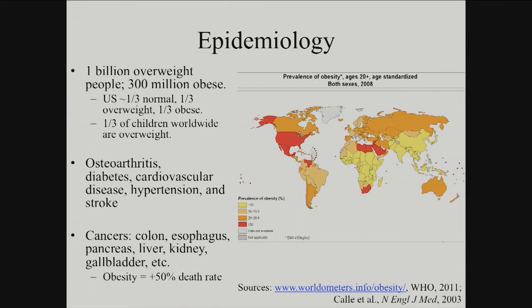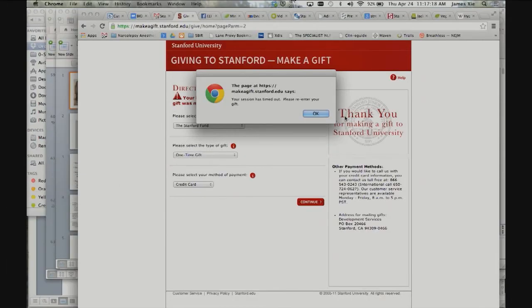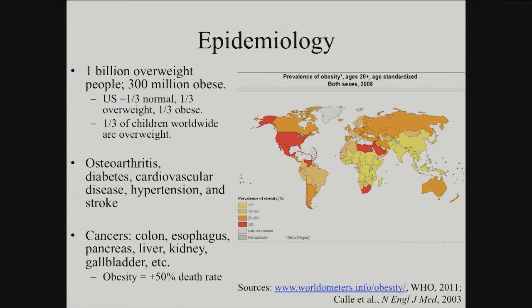Obesity itself is a problem because it is basically the root cause for a lot of other things — arthritis, diabetes, cardiovascular disease, strokes, hypertension. All of that is related to obesity. Sometimes it's a cause, sometimes it's a correlation, and it really depends on the person. It also increases your chances of getting cancer. If you're obese, you are more likely to die than if you're not.